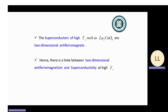The high-temperature critical superconductors, such as the cuprate compounds, are two-dimensional antiferromagnets. Hence, there is a link between two-dimensional antiferromagnetism and superconductivity at high critical temperature.